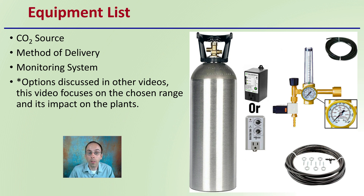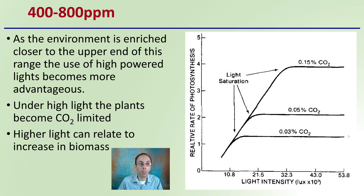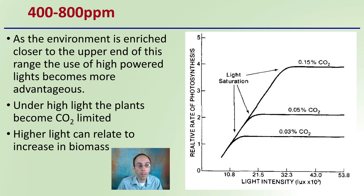This video focuses on the chosen range and its impact on the plants. The image here shows what a bottle system might entail. Looking at that 400 to 800 parts per million range, as the environment is enriched closer to the upper end, the use of high-powered lights becomes more advantageous. Under high light, the plants become carbon dioxide limited.